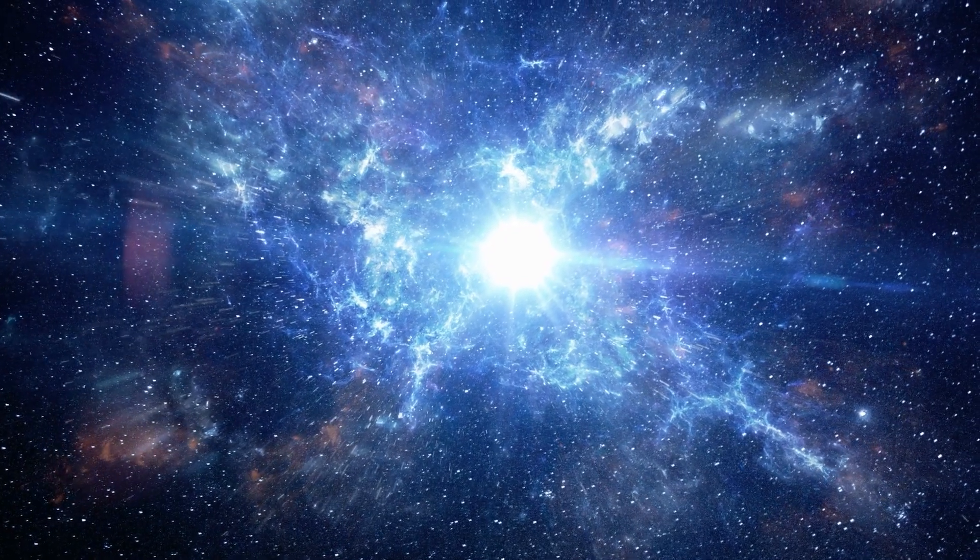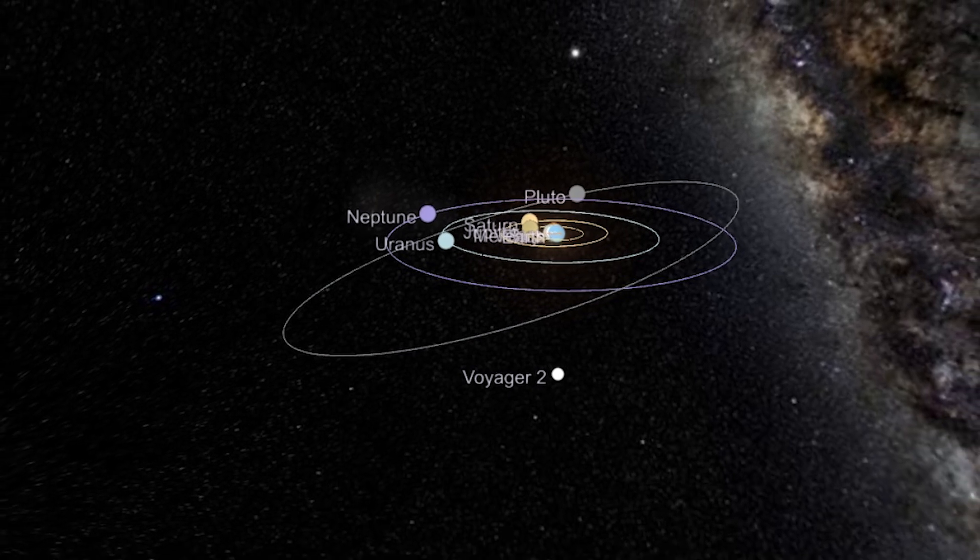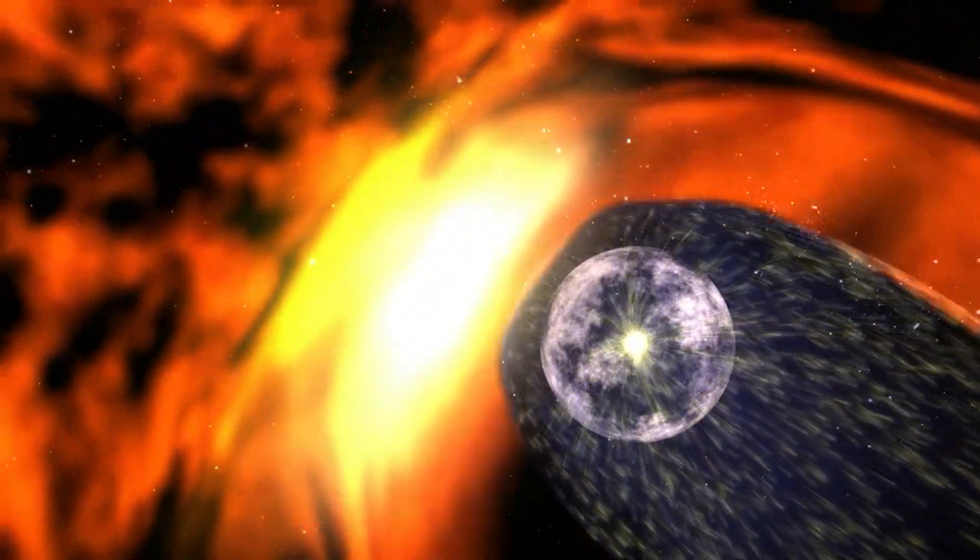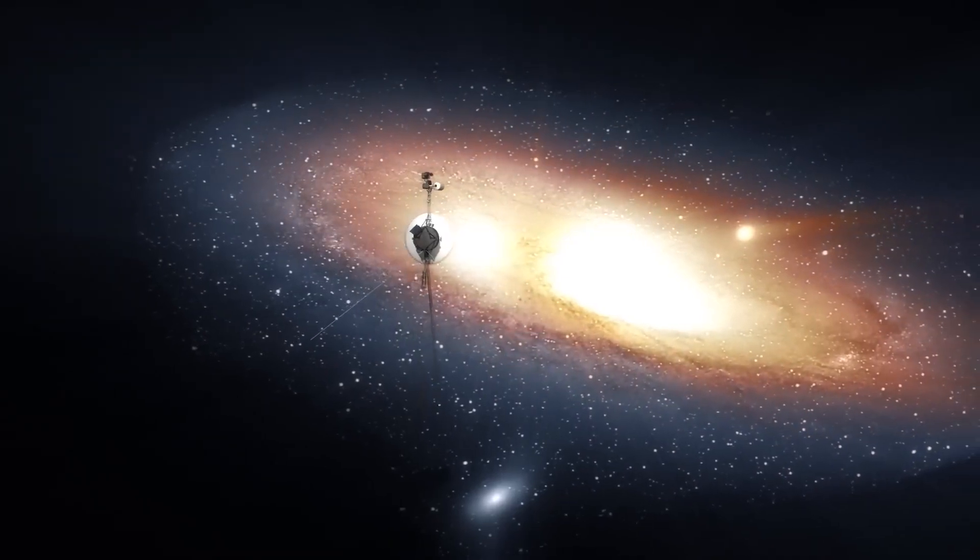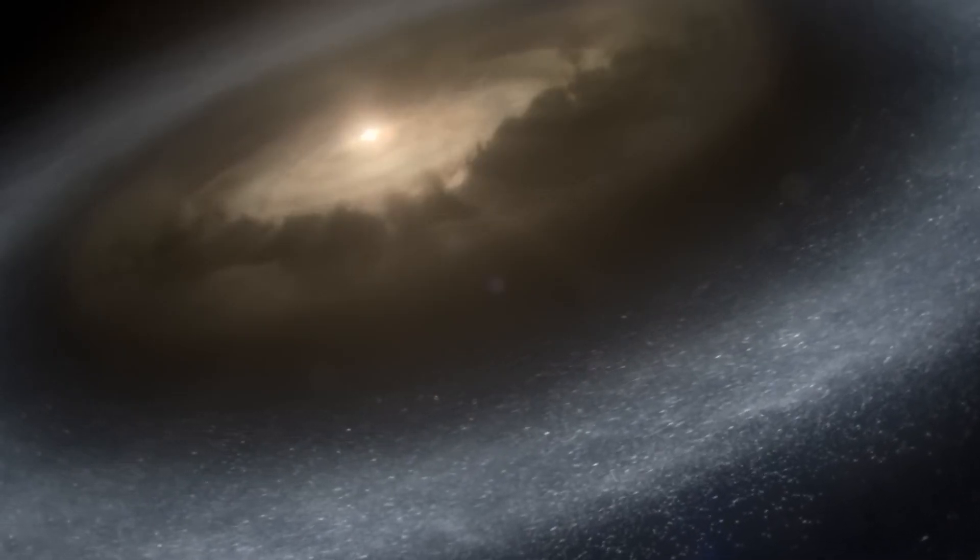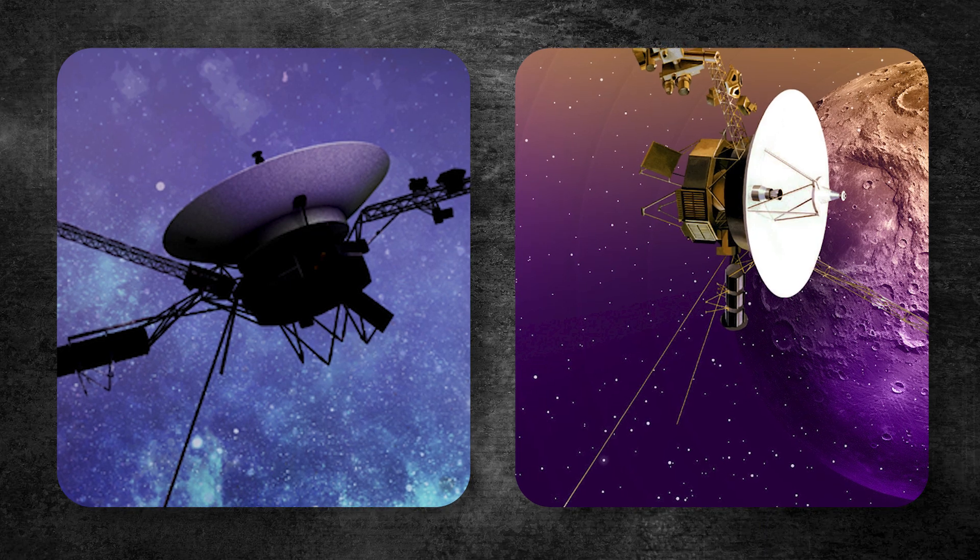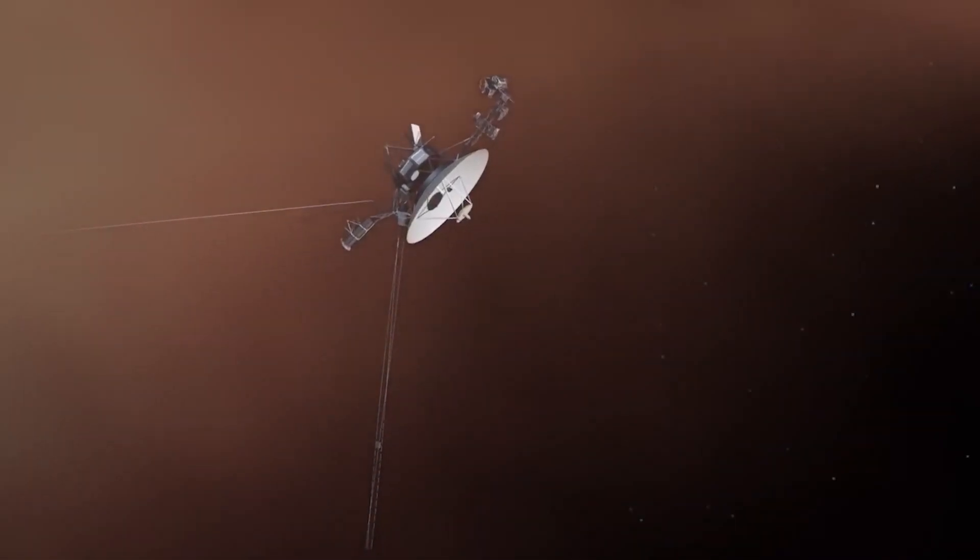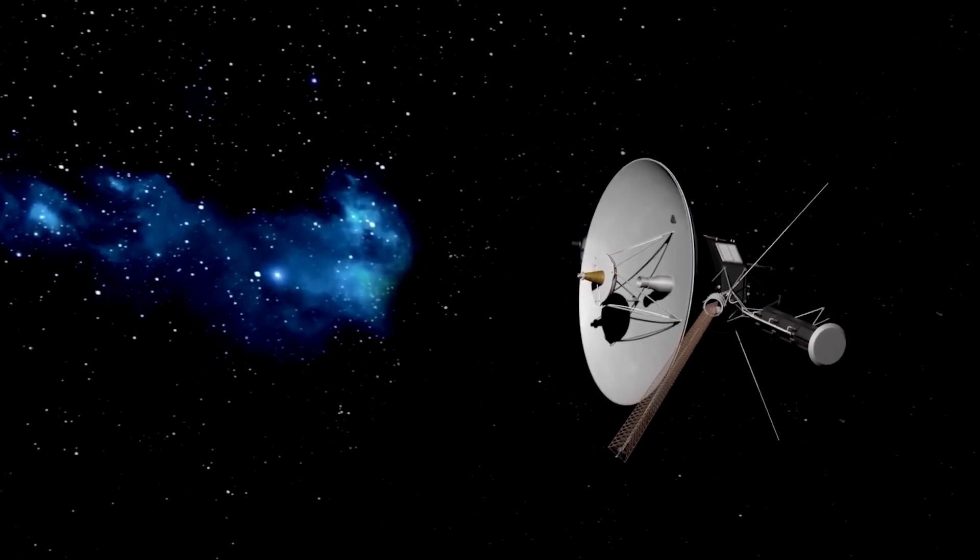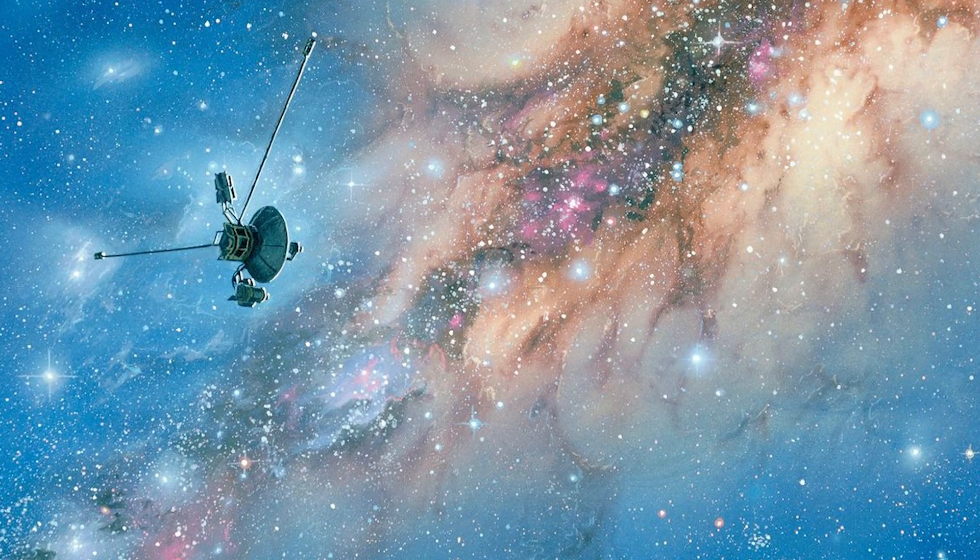The Voyager spacecraft have sent back information that changed what we know about the faraway planets and revealed how complex the heliosphere really is. Their discoveries have paved the way for future missions, showing us the need for even more advanced spacecraft. Voyager 1 and Voyager 2 are examples of our desire to explore, encouraging us to look beyond what we already know. As the Voyagers move further into space, they stand as proof of humanity's amazing accomplishments.